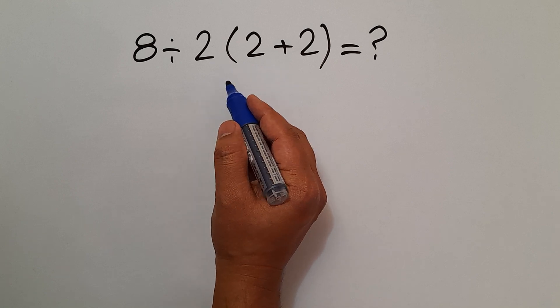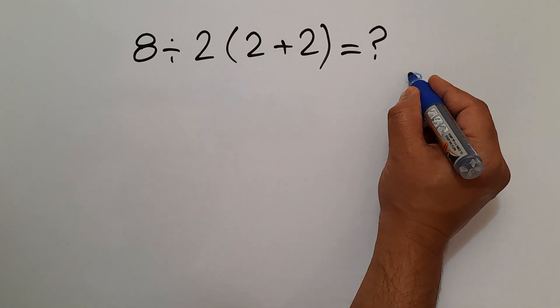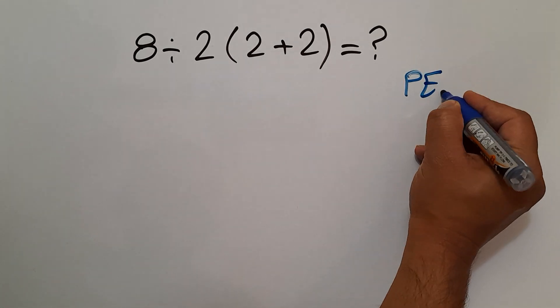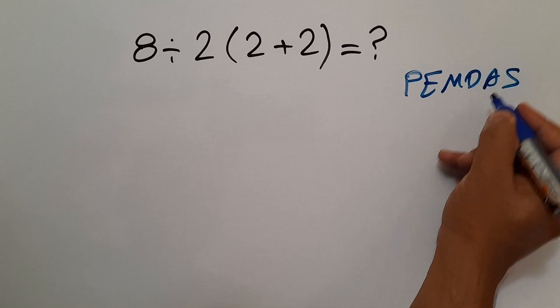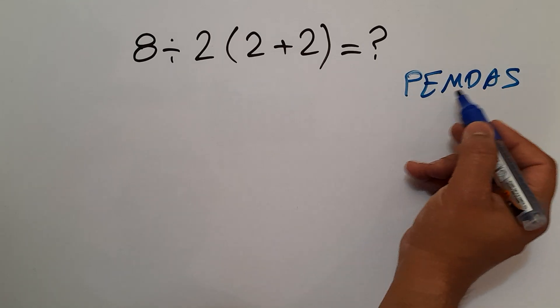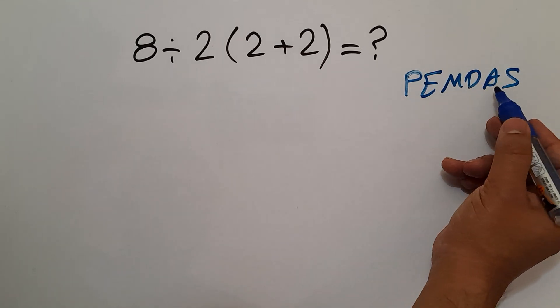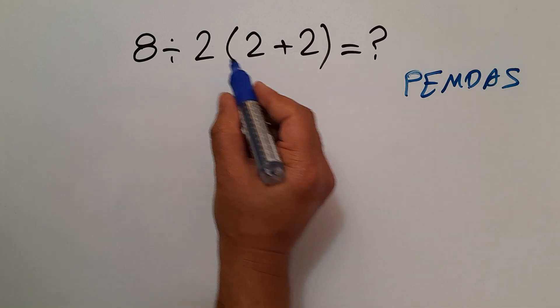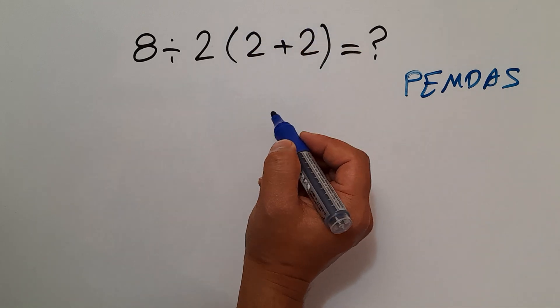According to the order of operations, which is PEMDAS, we first do parentheses, then exponents, then multiplication and division, and finally addition and subtraction. So here we first do these parentheses.